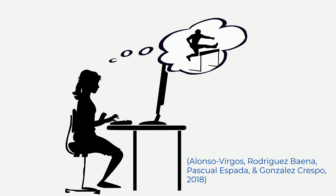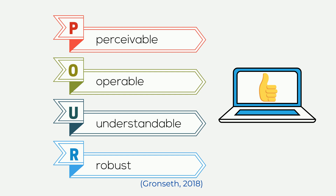The Web Content Accessibility Guidelines have organized their framework for web accessibility into four categories for a proper website: perceivable, operable, understandable, and robust.